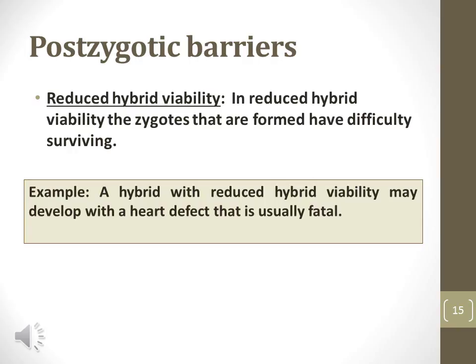The first postzygotic barrier is reduced hybrid viability. In reduced hybrid viability, the zygotes that are formed have difficulty surviving. A hybrid with reduced hybrid viability may develop a heart defect that is usually fatal, for example.